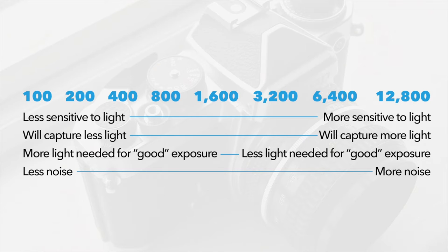If you have your camera set to ISO 100, your camera is less sensitive to light — it will capture less light and won't let as much light affect the scene. More light would be needed to have a good exposure, and it will have less noise.